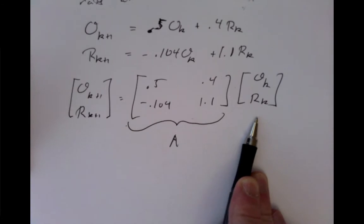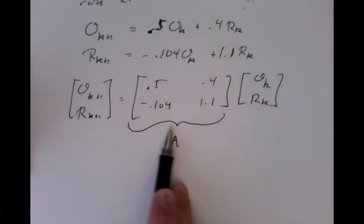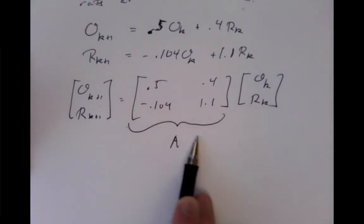So how do we do that? Well, every time we go from one month to the next, we multiply by this matrix. So if we want to go a large number of months, we want to multiply by this matrix a large number of times.